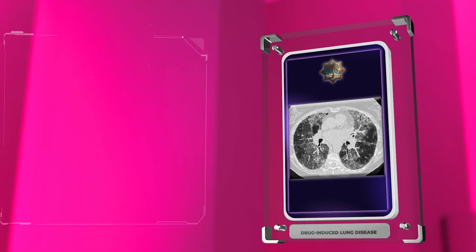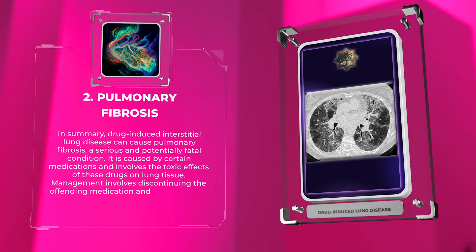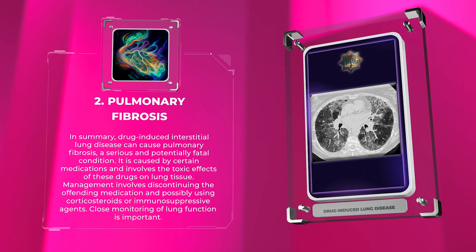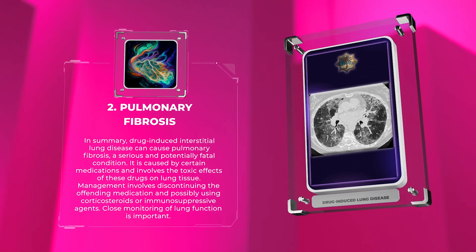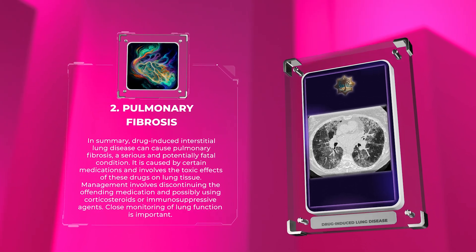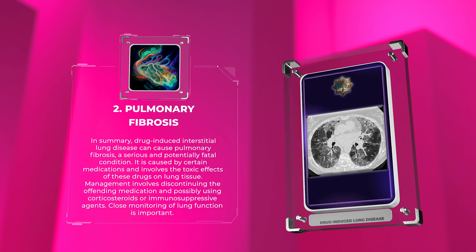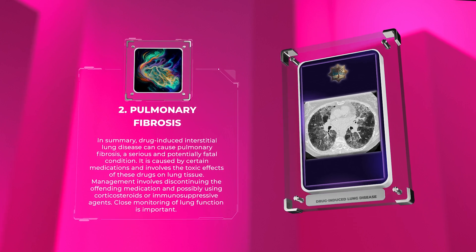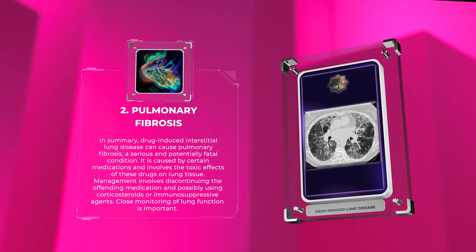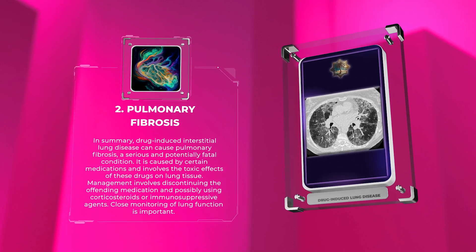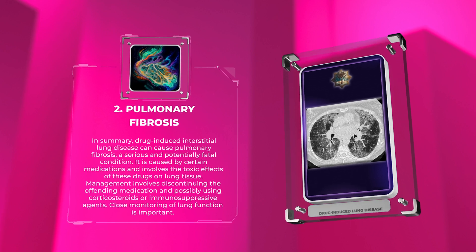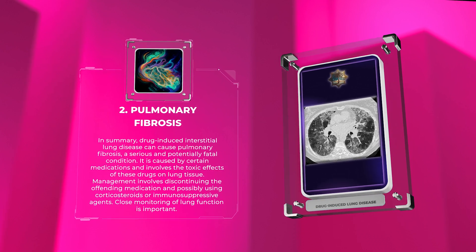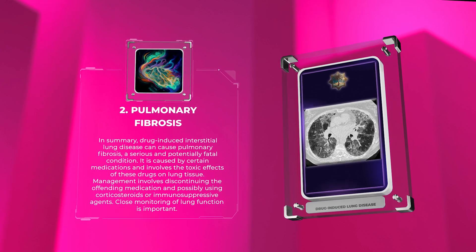Drug-induced interstitial lung disease can cause pulmonary fibrosis, a serious and potentially fatal condition. It is caused by certain medications and involves the toxic effects of these drugs on lung tissue. Management involves discontinuing the offending medication and possibly using corticosteroids or immunosuppressive agents. Close monitoring of lung function is important.